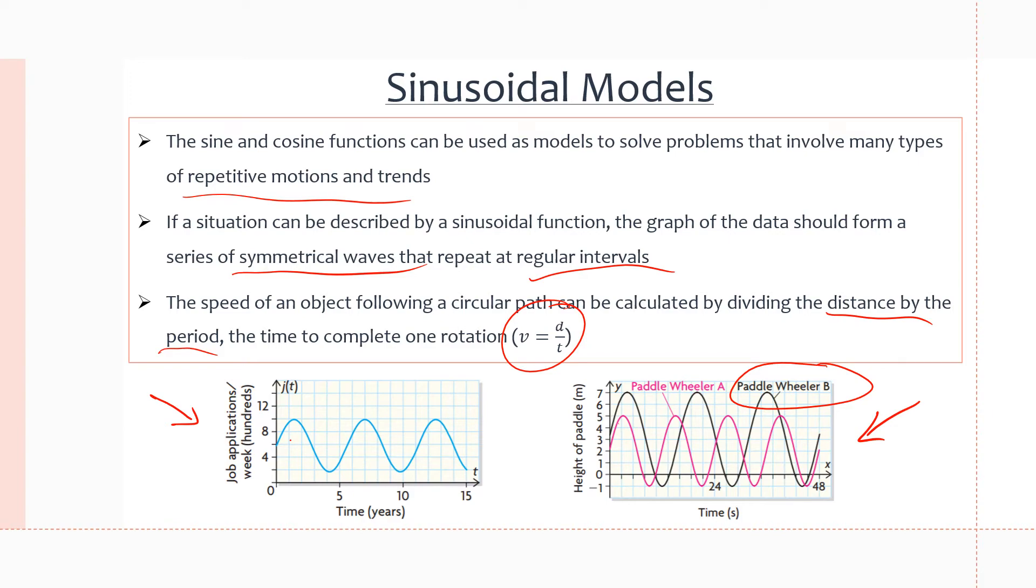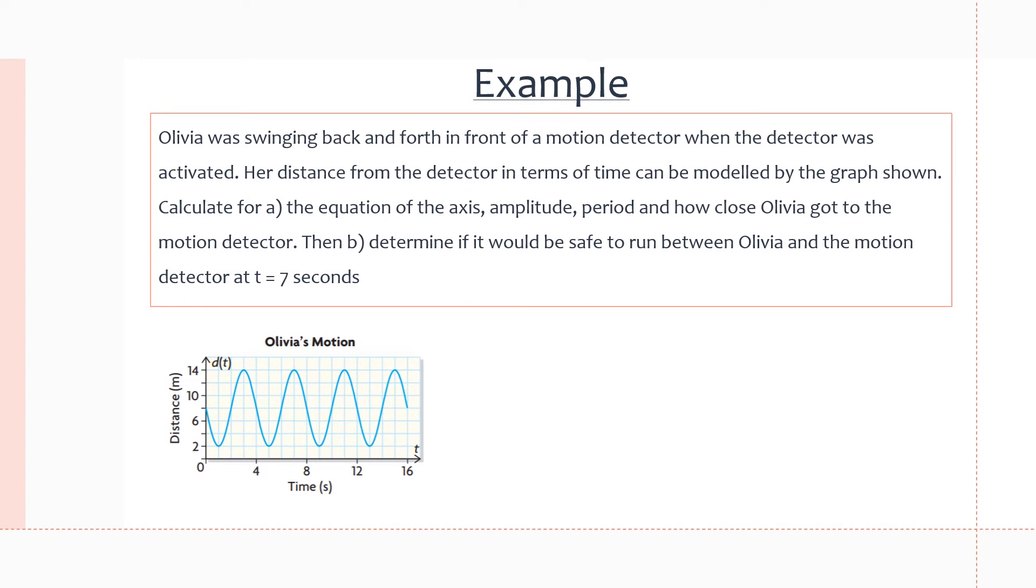Let's get into an example here. It says Olivia was swinging back and forth in front of a motion detector when the detector was activated. Her distance from the detector in terms of time can be modeled by the graph shown. Calculate A: the equation of the axis, amplitude, and period and how close Olivia got to the motion detector.